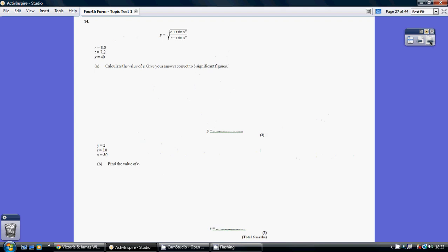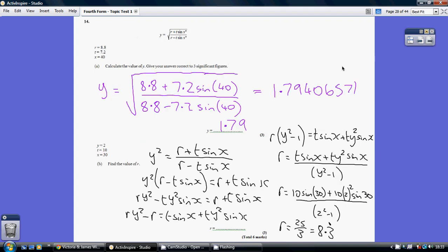Question 14. This is quite difficult. Part A, you're just literally substituting in. Substituting the values and rounding to three significant figures, you get 1.79.